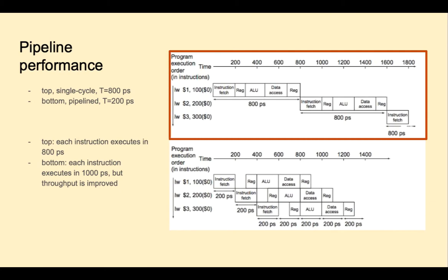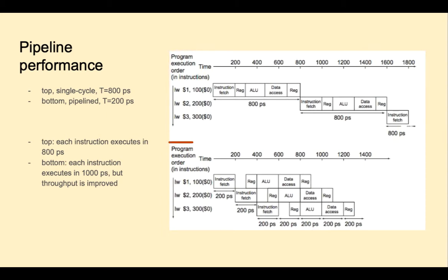On the top, we have the single cycle implementation, the non-pipeline version. Each instruction has the whole CPU to itself. At the end of the 800 picosecond clock cycle, a new instruction can come into the CPU. In the bottom, we see what pipelining will do for us. As the first instruction coming into the CPU finishes its instruction fetch stage, that circuitry is now free, and so another instruction can come in and start being fetched.